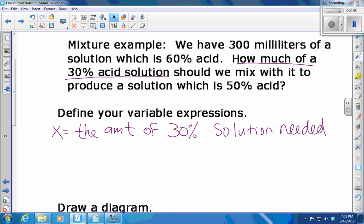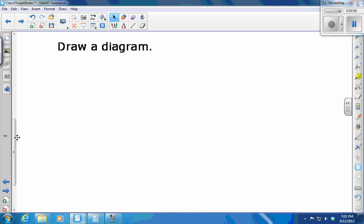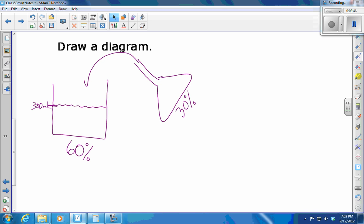Once we have a variable defined, that'll help us in drawing our diagram, creating a table, and finally writing an equation. My diagram is: I have 300 milliliters of 60%. So here's my 60% solution, 300 milliliters. I'm going to add some 30% solution to it to dilute it a bit, because I want the percentage to come down to 50%. So I've got a beaker filled with some 30% solution, and I'm going to pour it in here. The question is, how much of this needs to go in here? So x milliliters is going in there.